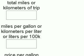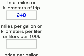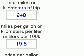Our example is going to be a trip from Cincinnati, Ohio to Tampa, Florida. The distance for that trip is 940 miles. The efficiency of our vehicle is going to be 19.8 miles per gallon, which is basically the average for the United States vehicle fleet according to the 2005 highway statistics from the US Department of Transportation Federal Highway Division.